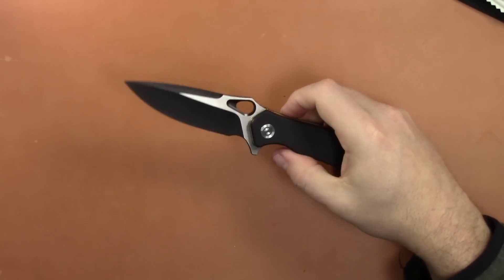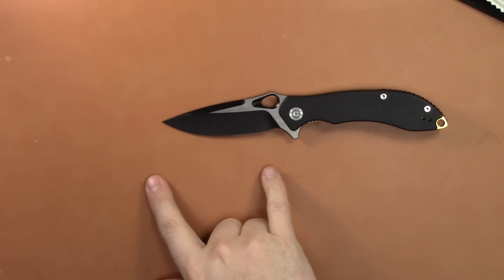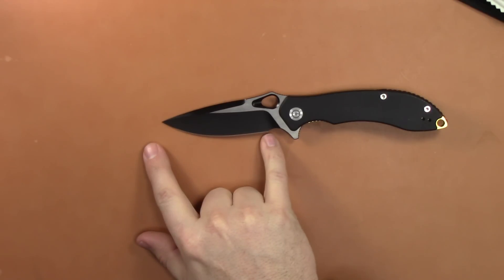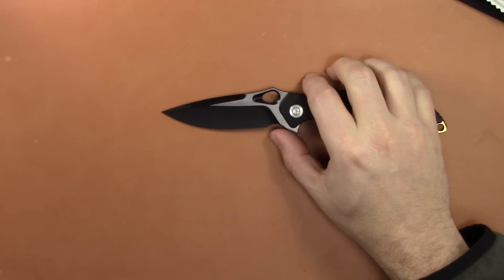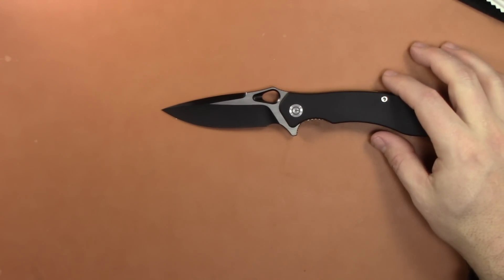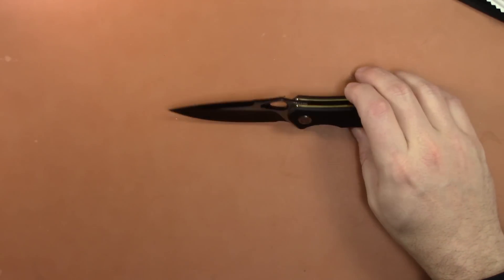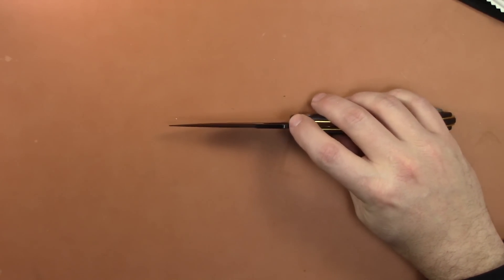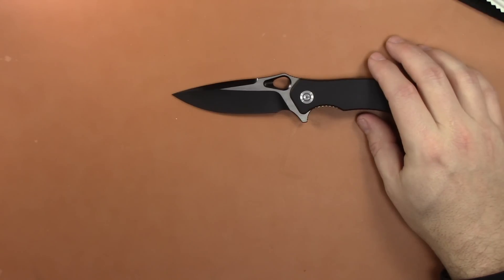Your overall length is 8.3 inches. Your blade length is 3.45 with a cutting edge of 3.15 due to that finger choil here. You've got a blade width of one inch. Blade thickness is 0.13. So it's pretty thin. It is VG10 steel. They're running about 59 to 61.